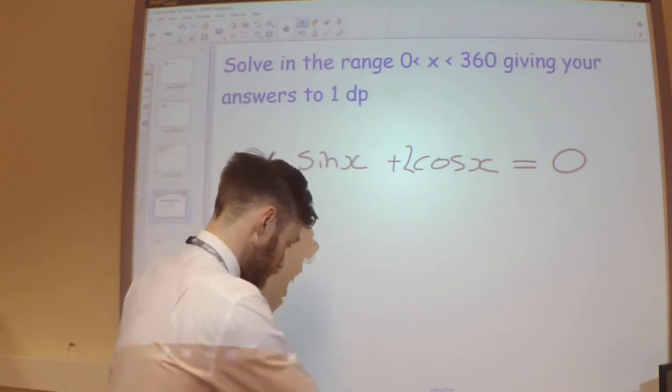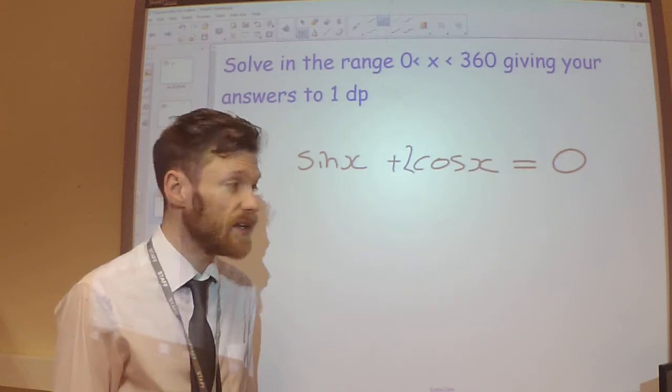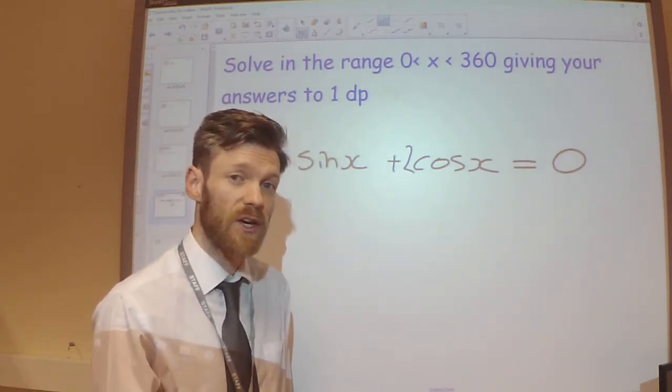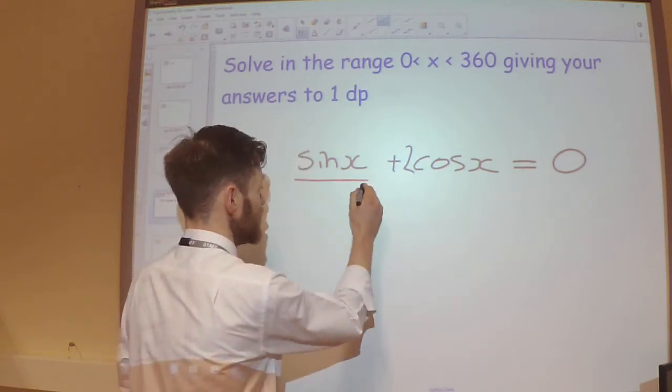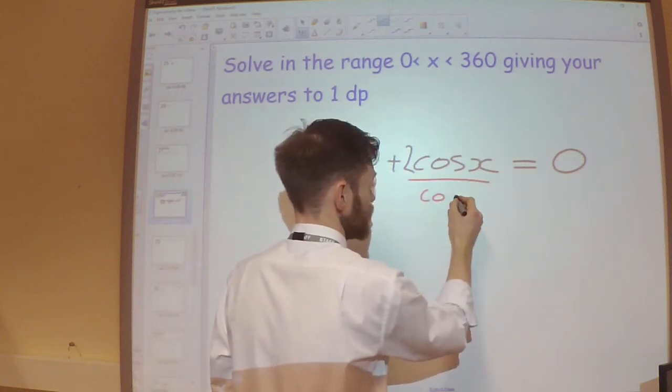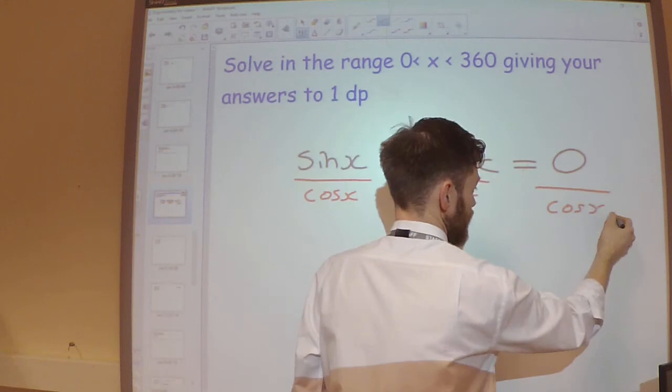The way I'm going to do that is if I divide through each part of this equation by cos x. So if I'm going to divide the left-hand side by cos x, I must divide the right-hand side by cos x as well.